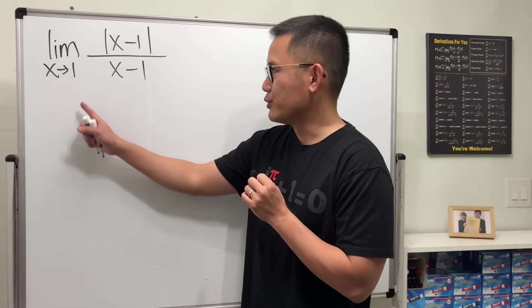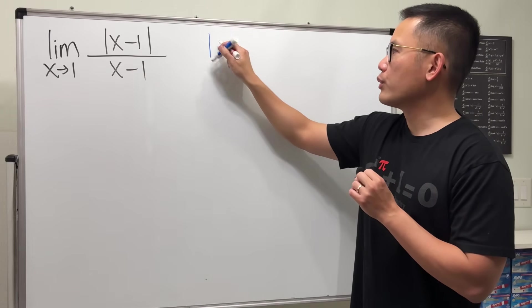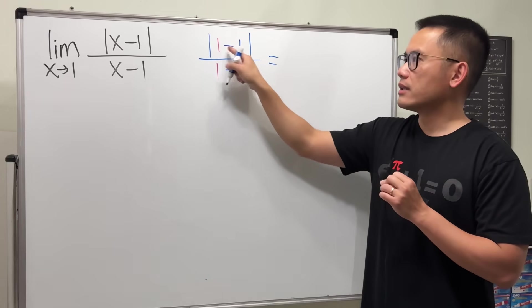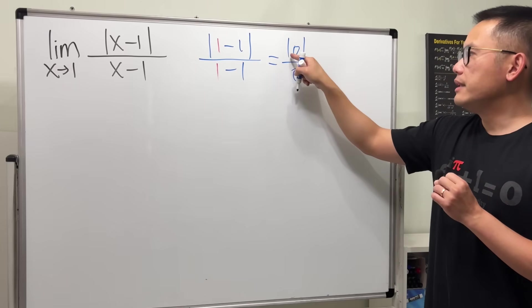First, let's just do the usual thing. Let's plug in 1 into all the x's. So we get absolute value of 1 minus 1 over 1 minus 1. On the top, it's absolute value of 0. On the bottom, 0.